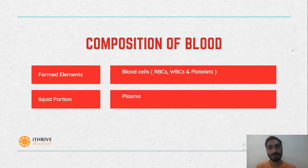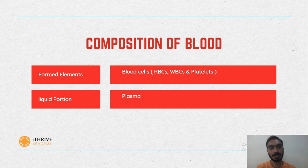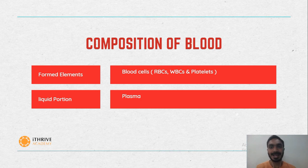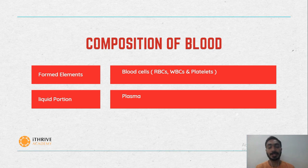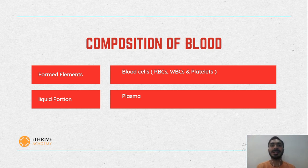Now talking about the composition of blood. Our blood consists of formed elements, which is the cellular portion, and the liquid portion. The cellular portion consists of mainly three types of cells: RBCs (red blood cells), WBCs (white blood cells), and platelets. The liquid portion of blood is known as plasma. Plasma contains proteins such as fibrinogen, prothrombin, and albumin. It also contains water and other solutes like ions, minerals, and other waste products.